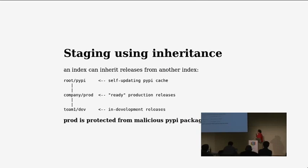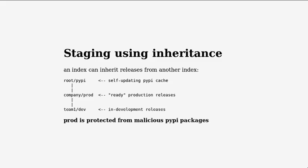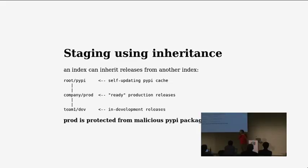There's one feature that distinguishes DevPI from other indexes — it provides an aggregation or inheritance feature. You have the so-called root PyPI, which is the cache. You can directly use that if you don't care for private indexes. But here we have a production index which contains your private packages that you don't want to publish on PyPI, which might depend on PyPI release files. If you work against the company production index, you get one unified view of your private packages and all PyPI packages.